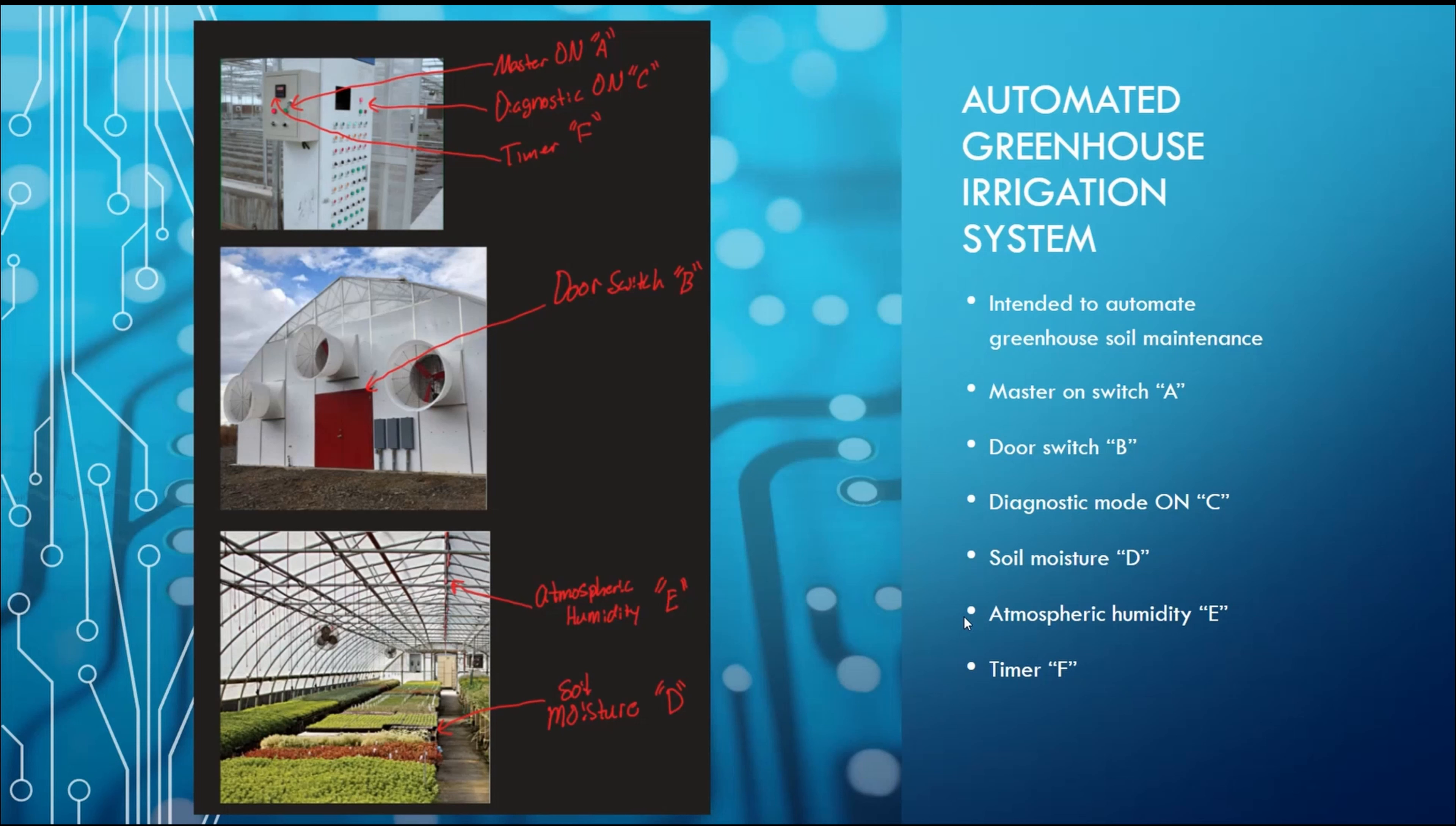We constantly monitor soil moisture, input D, atmospheric humidity inside the greenhouse, input E, as well as keep track of the last time the irrigation system was on, input F, to maximize efficiency.